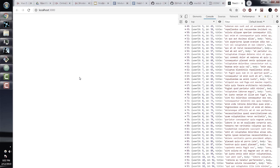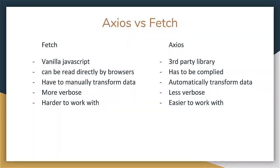In this section we'll do the same thing but with fetch and the async/await keywords. Fetch is vanilla JavaScript — not a third-party library like Axios — so it can be read directly by browsers, whereas Axios has to be compiled. One downside of fetch is that you have to manually transform data, unlike Axios which does it automatically. Fetch is also more verbose and, in my opinion, harder to work with, which is why I use Axios instead.